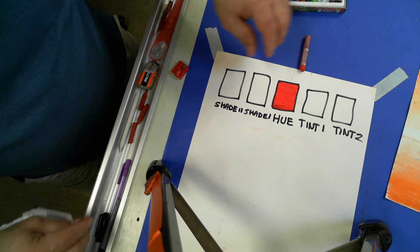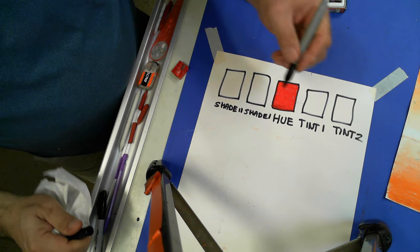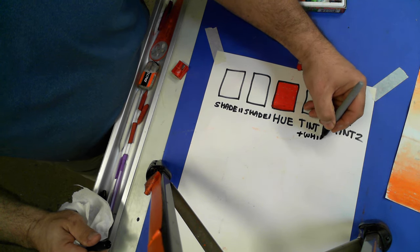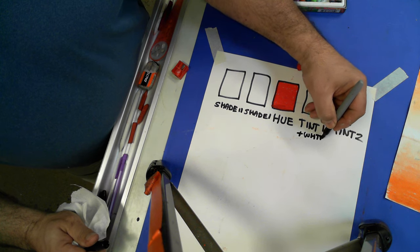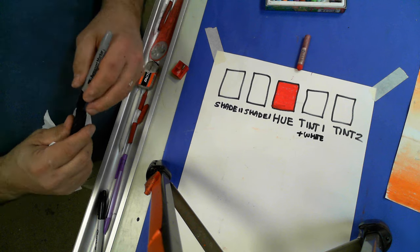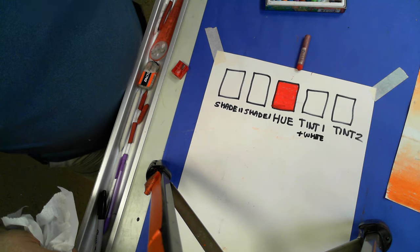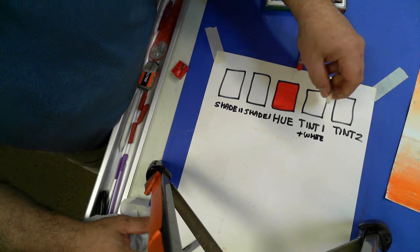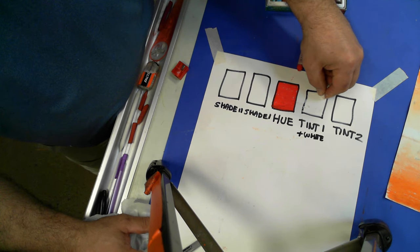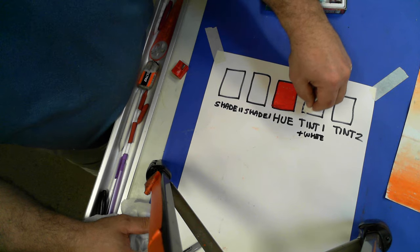Now with tint, I'm going to add white. So I'm going to go one part white here. So I'm going to take my white, and I'm going to put white, and I'm going to go one direction first. Then I'm going to crosshatch it.